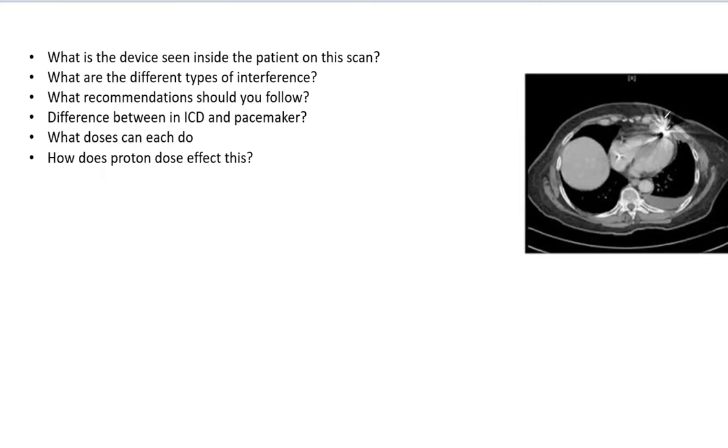So now what are the different types of interference? There is transient interference that can occur if inside the beam, and that means the pace may be off.